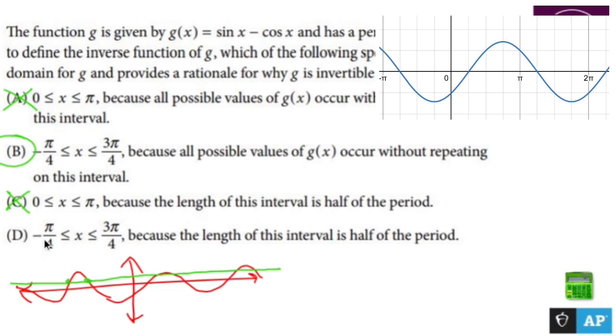So why is D not my guy? Because it tells me that the length of the interval is half of the period, that has nothing to do with any of these guys, because technically all of these guys are half the period. So if we were to be like, well if it's half the period, then why don't I just choose this guy?